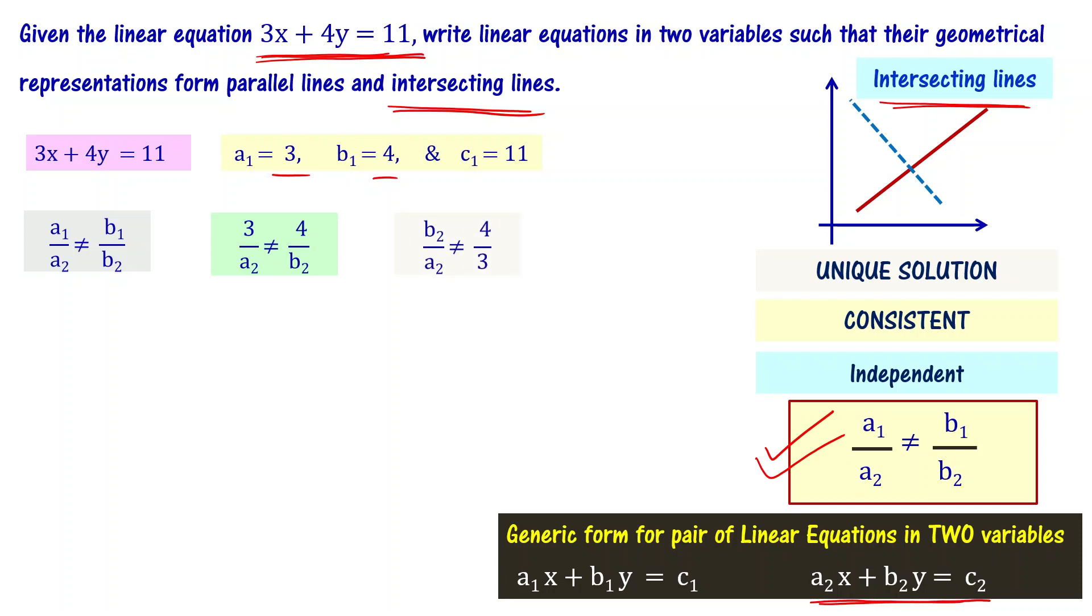So 3 by a2 is not equal to 4 by b2, which means b2 by a2 is not equal to 4 by 3. So b2 by a2 should be a different ratio, not 4 by 3. Let's take b2 by a2 equal to 6 by 3. So b2 is 6 and a2 is 3. For c2, there is no restriction from this particular relation, so I can choose any value. I chose c2 equal to 14.